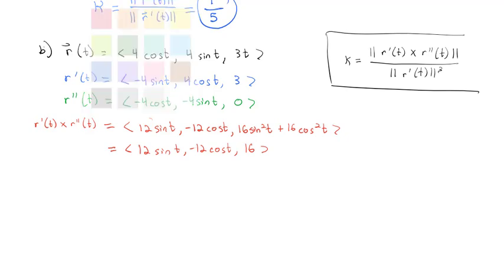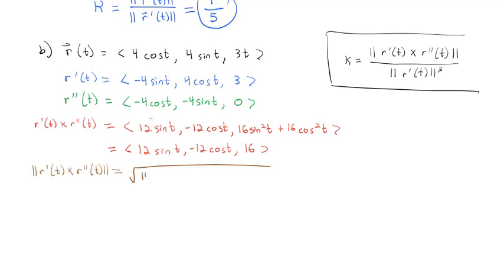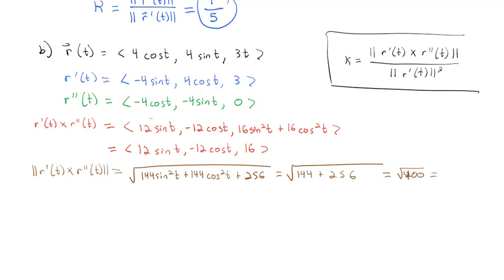The numerator of the curvature is the magnitude of r' crossed with r''. The magnitude of that cross product is the square root of 144sin²(t) + 144cos²(t) + 256. Factoring out 144 from the first two terms, we get sin² + cos² = 1, leaving 144 + 256 = 400. The square root of 400 is 20.